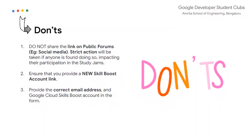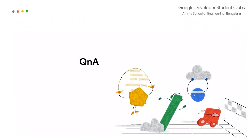Also, make sure you provide a new Cloud Skills Boost account link — it's very important that you make a new account and fill that link. Make sure there are no spelling mistakes in the link, and provide the correct email address. About making an account: please don't make one right now. We'll let you know on the WhatsApp group when you can make the account — there is a specific date we'll receive after which you need to make an account, so just hold on for now.